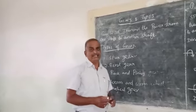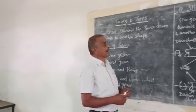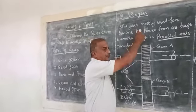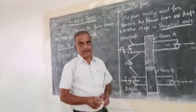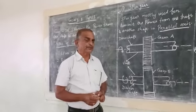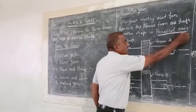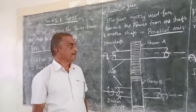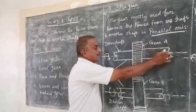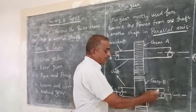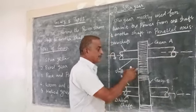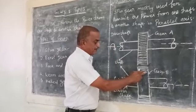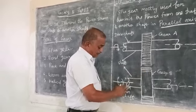There are two types of gears. First, the spur gear. Spur gear is mainly used to transmit the power from one shaft to another shaft on a parallel axis or horizontal axis. If you look at that, gear A is fixed in the driver shaft, and gear B is fixed with the driven shaft.